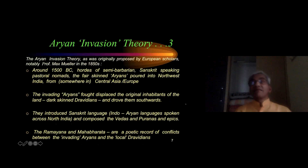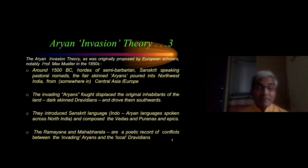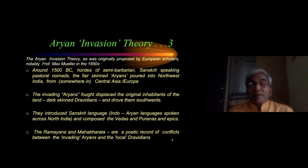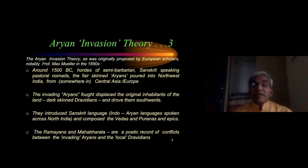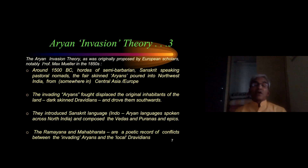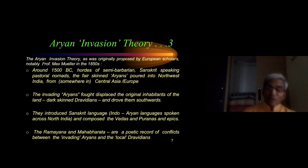A little earlier, they were looking at India with great awe, as I will show in the next session. The theory as proposed says that around 1500 BC, hordes of semi-barbarian, Sanskrit-speaking, pastoral nomads — the fair-skinned Aryans — poured into Northwest India from somewhere in Central Asia or Europe, where exactly is not known even today.